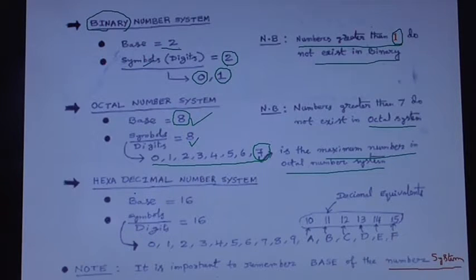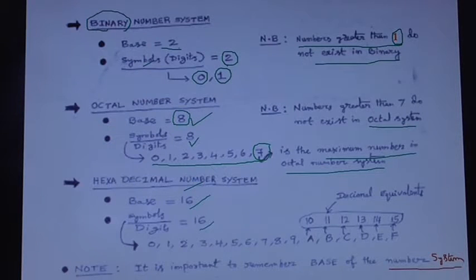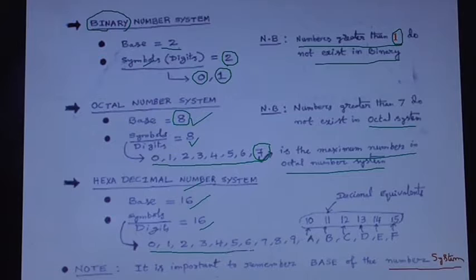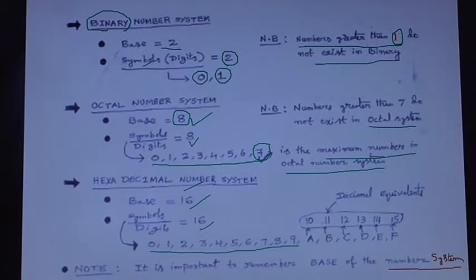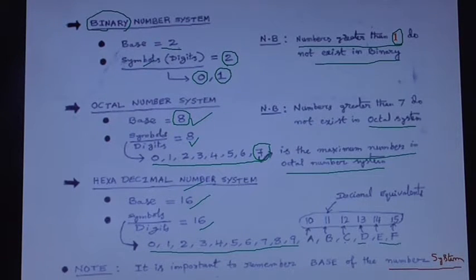For the hexadecimal number system, the base is 16. The number of symbols available is 16. The numbers start from 0 through 9, and then 10, 11, 12, 13, 14, and 15 are represented by A, B, C, D, E, and F respectively.